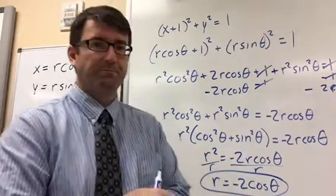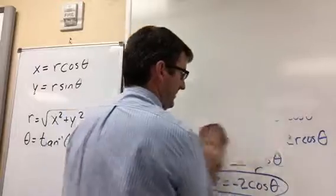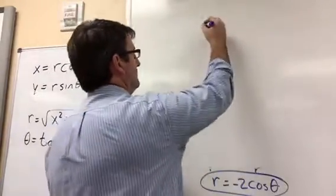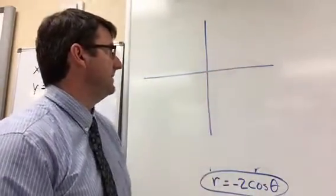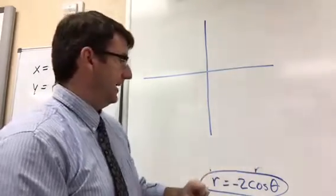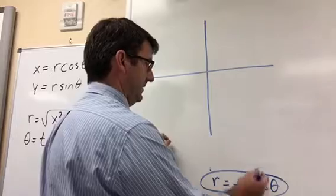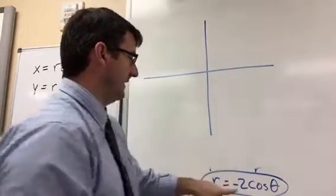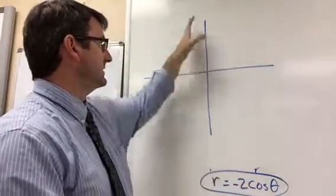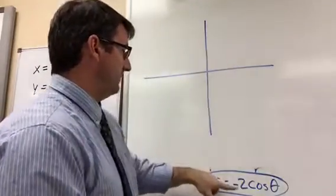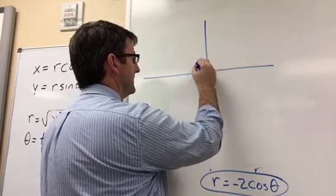Now we need to graph this. Since it's cosine, it's going to be symmetrical on the x-axis. From the graphs we did last week, we know it's going to be a circle. Because it's negative, it's going to be to the left of the y-axis, and it's going to have a diameter of 2.